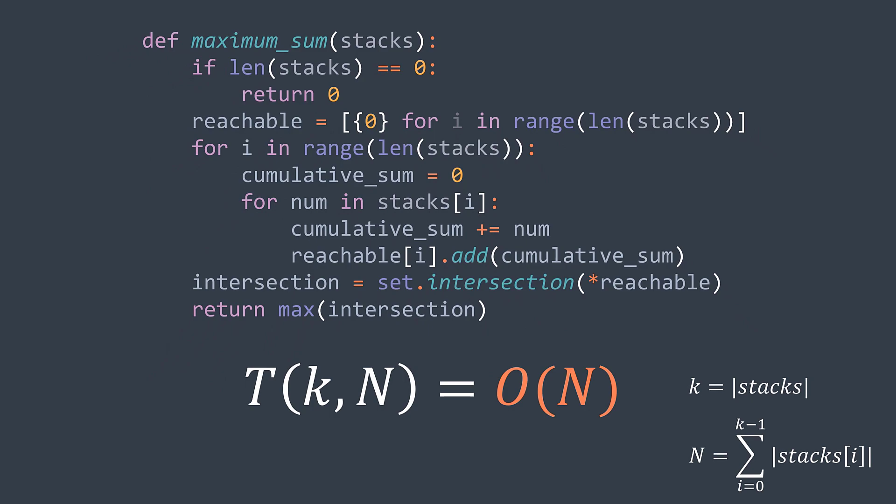And for the space complexity, we're using extra space for storing the reachable sums. Each stack has a number of reachable sums equal to its number of elements plus one. So in total, we have around N reachable sums, we got an O(N) space complexity.